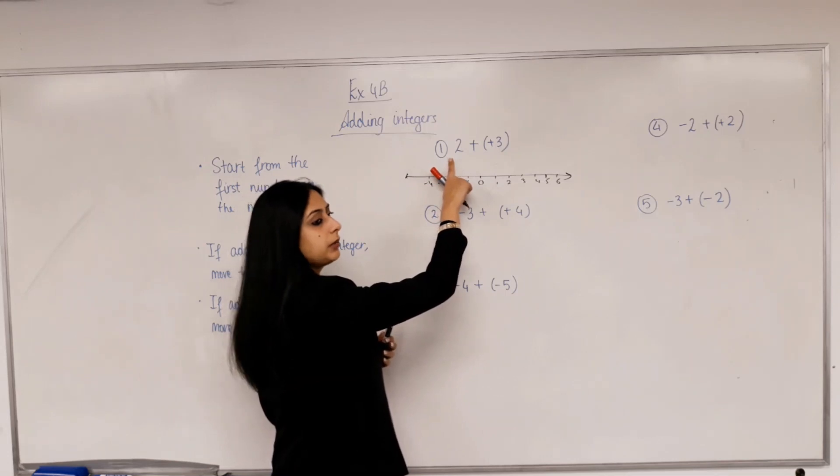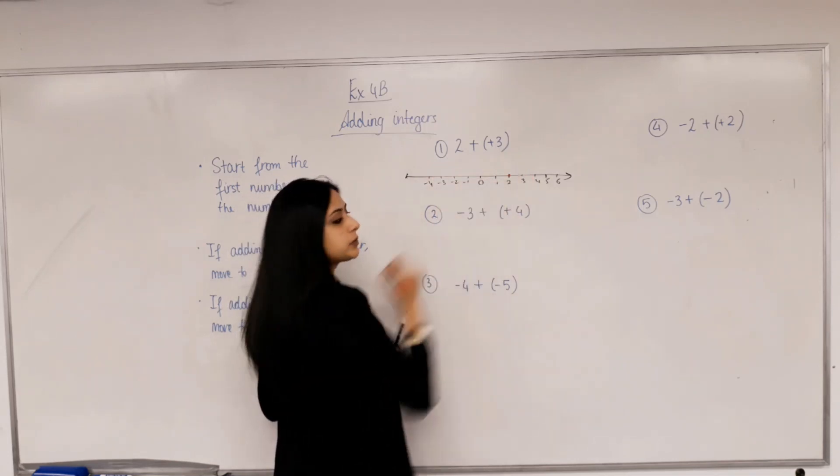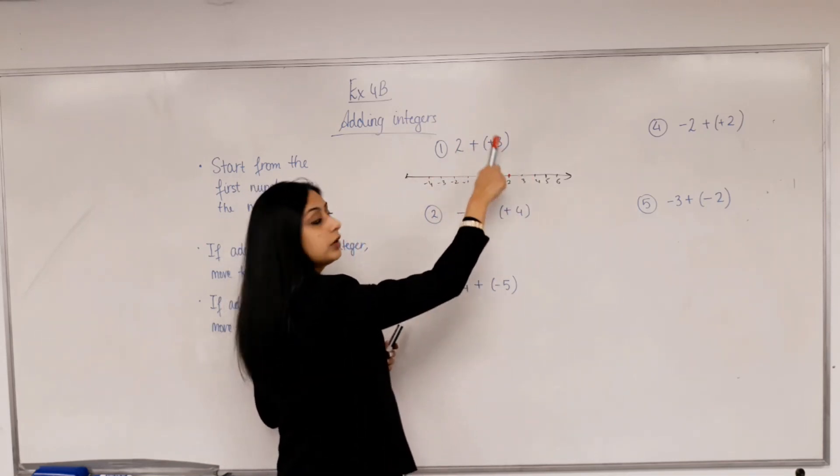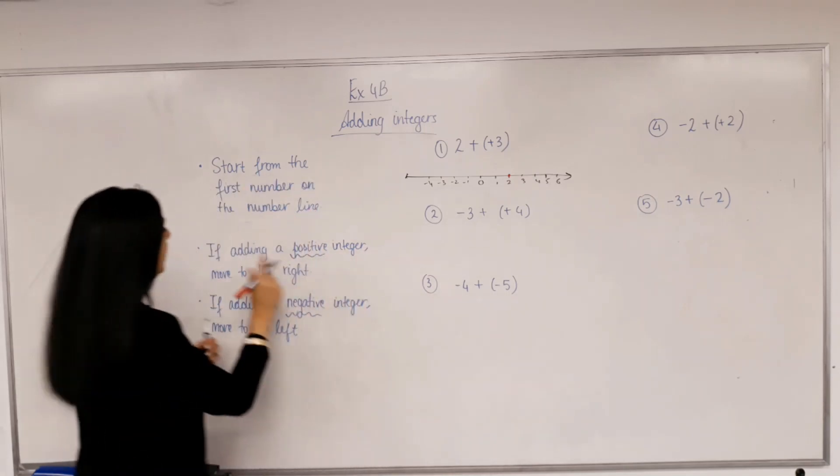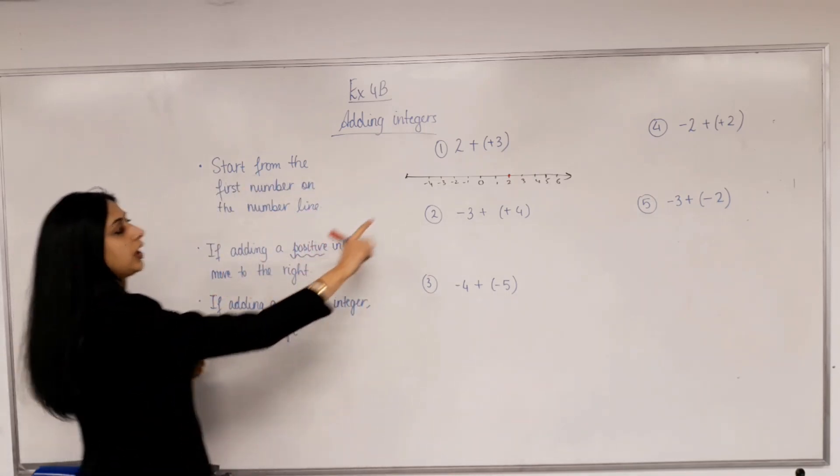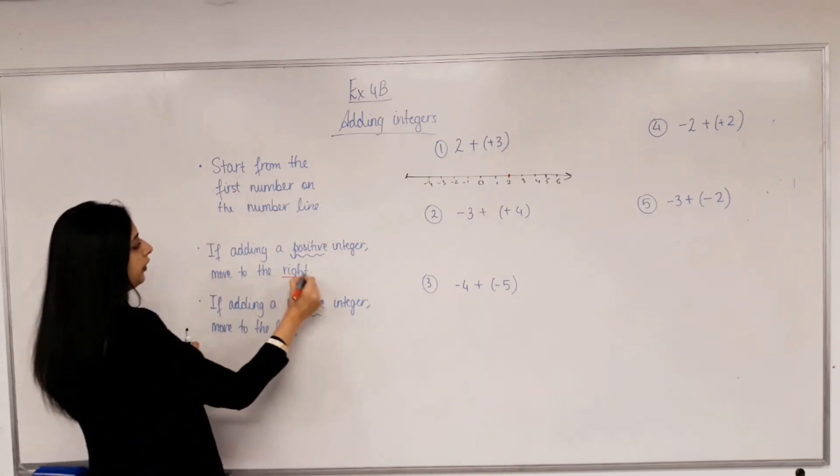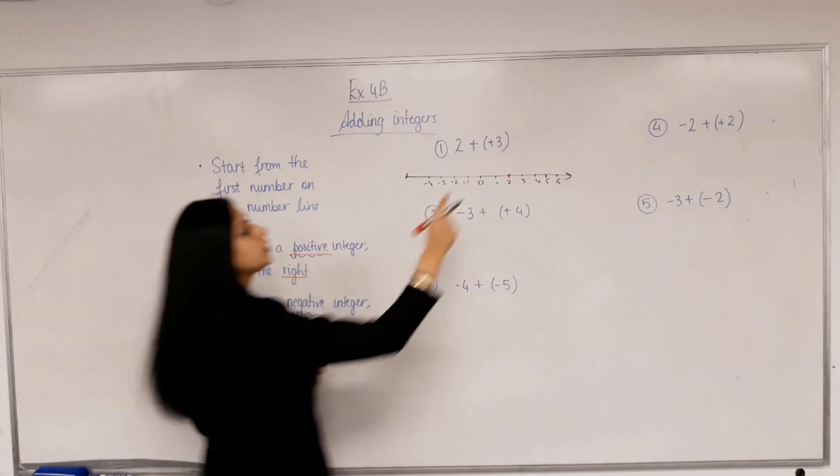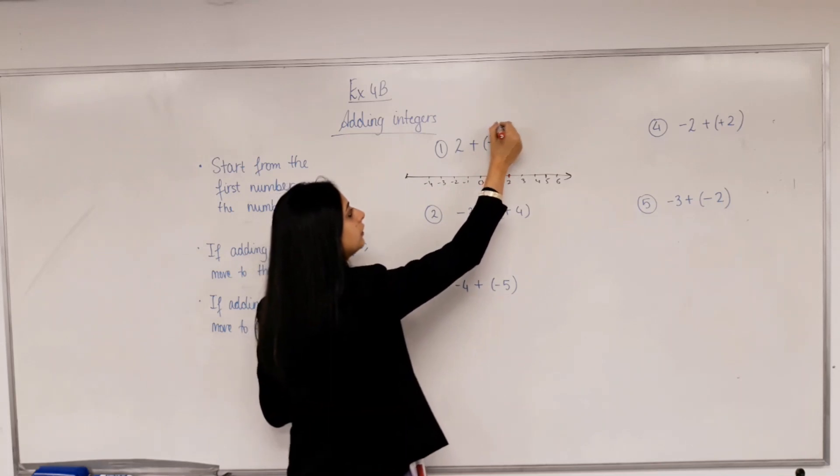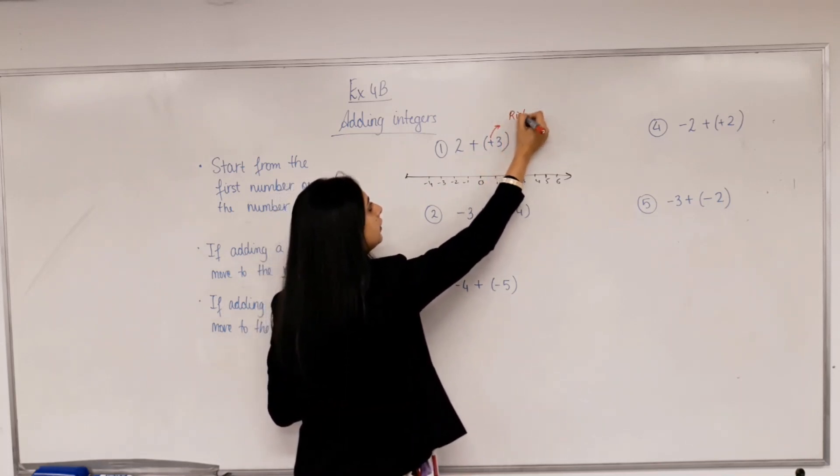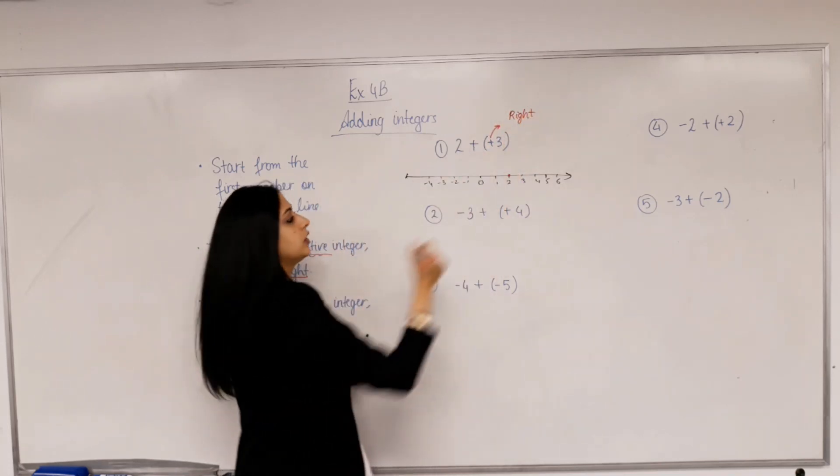Start from the first number. What's the first number? 2. So this is your first position. So you're adding 2 and positive 3. Then, if adding a positive integer, am I adding a positive integer? Yes. Which direction do you move? Right. So I need to move to the right. How many places? 3 places. So from here, 1, 2,